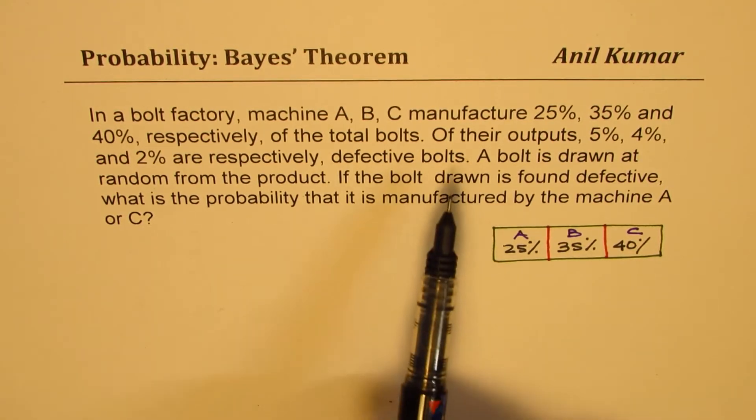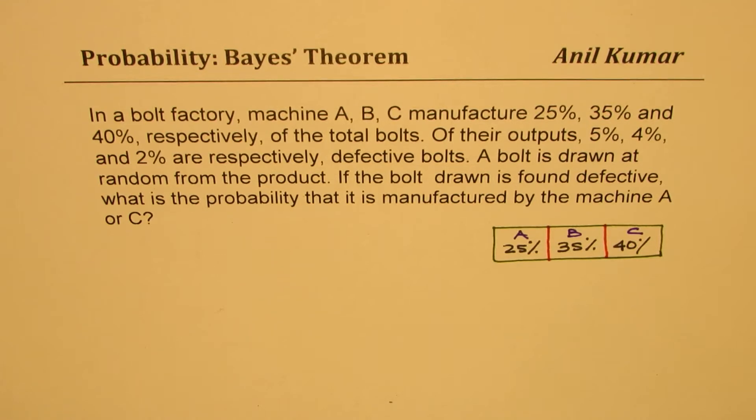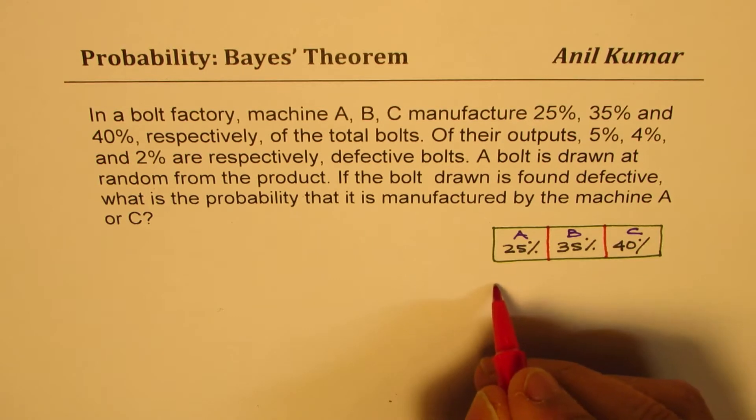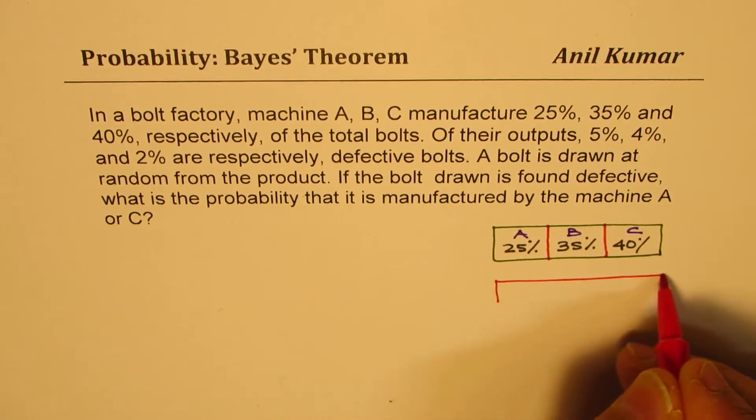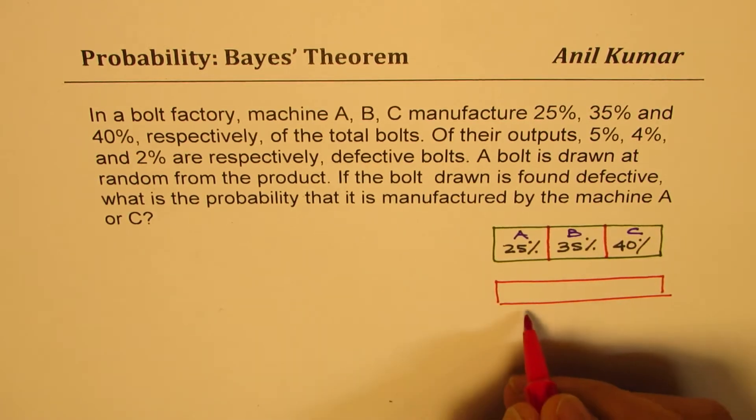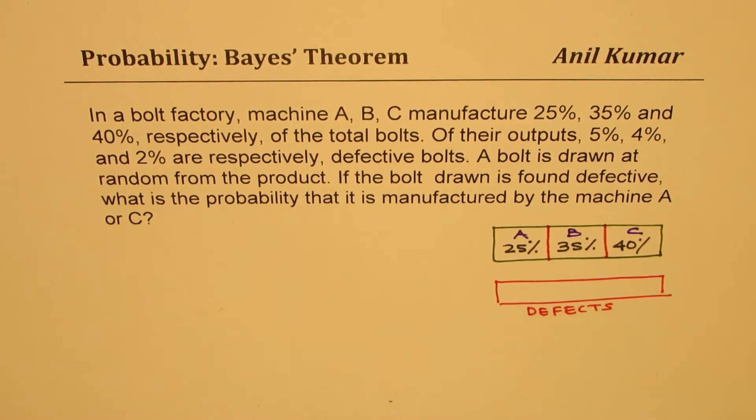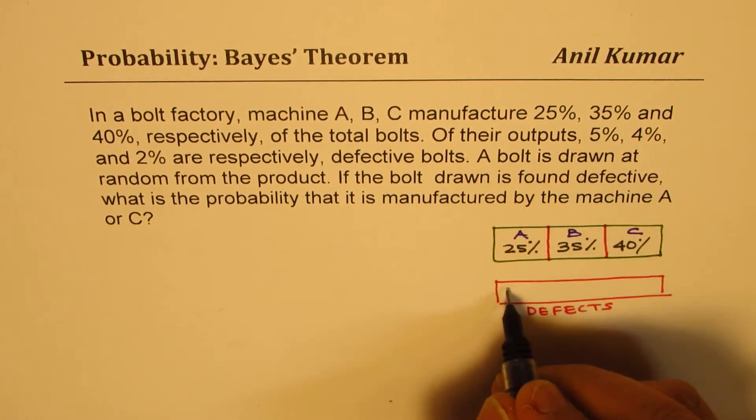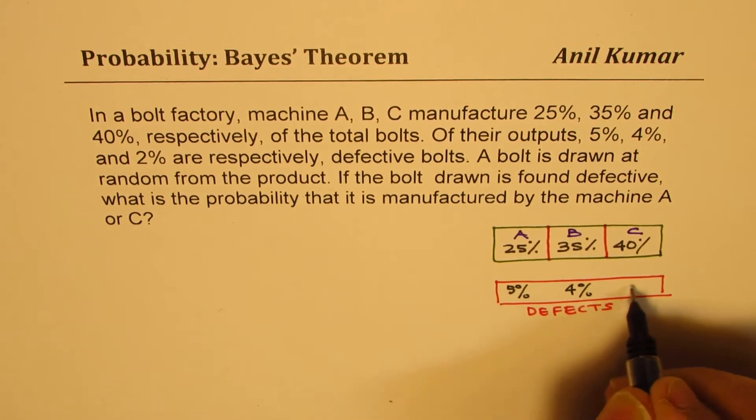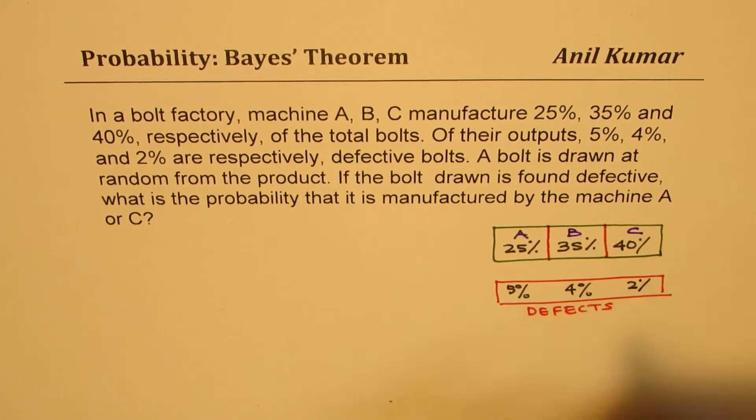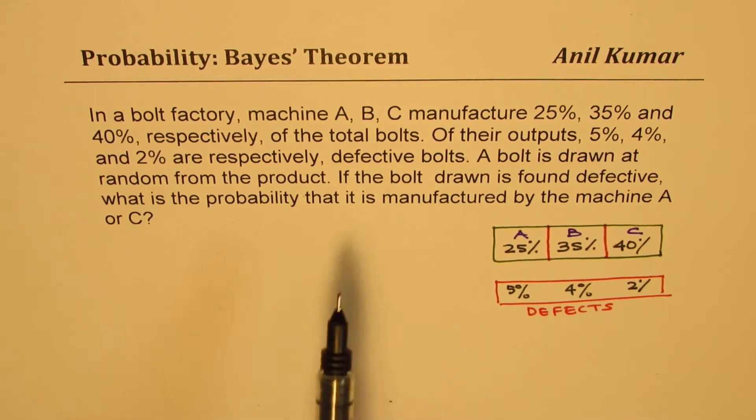Now what really happens here is that in the output, we have some defects. So let's look for the output. Most of it is okay, but there are some defects. The percentage of defects produced by each machine is given as: from the first, it is 5%, from the second, it is 4%, and from the third, it is 2%.